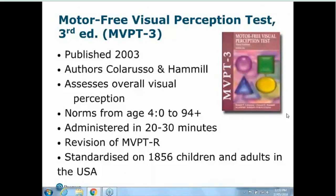Next is the Motor Free Visual Perception Test, or MVPT3. This is a test Pearson doesn't sell, but it's worth comparing. Published in 2003, it's getting quite old. It's an overall test of visual perception and doesn't give individual subtest scores like the previous two tests. The norms go from age 4 up to 94 — a much broader range — and we'll discuss why it might be used with older populations.